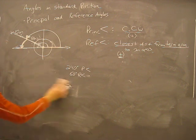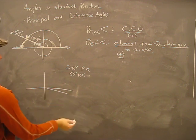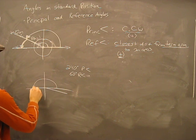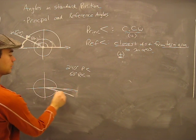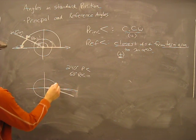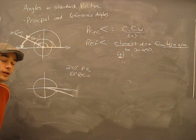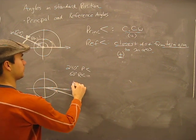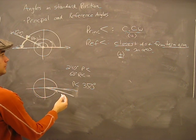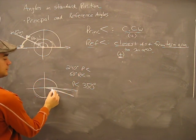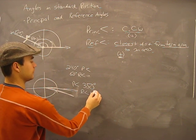Let's try the last quadrant. Suppose your terminal arm is just below the positive x-axis and your principal angle is 350 degrees. Your reference angle would be the closest distance from the terminal arm to the x-axis, which is only 10 degrees. So the reference angle is 10 degrees in this case.